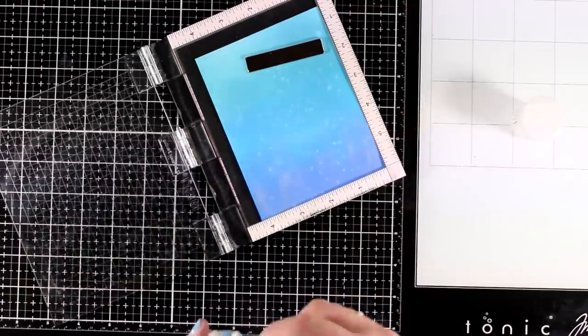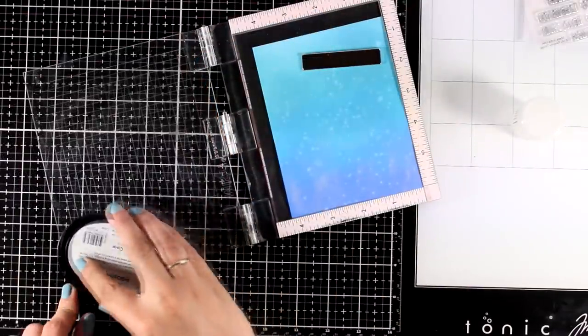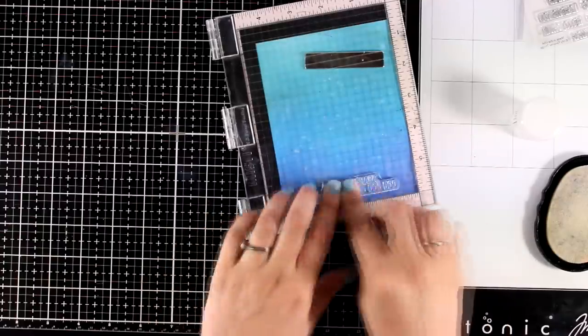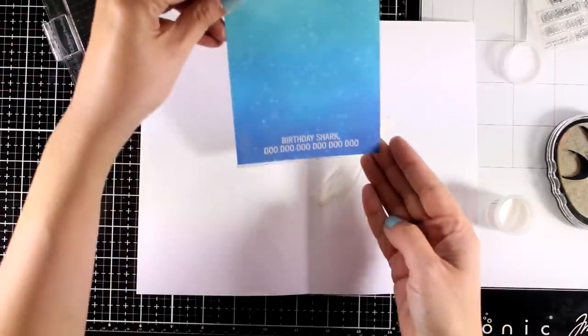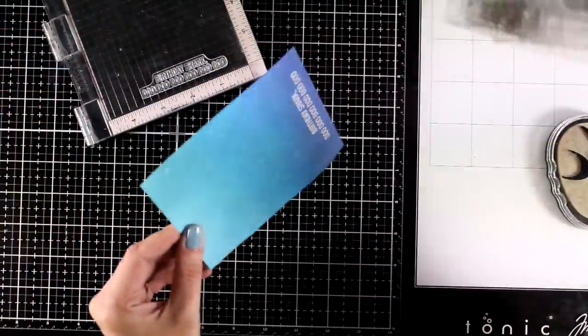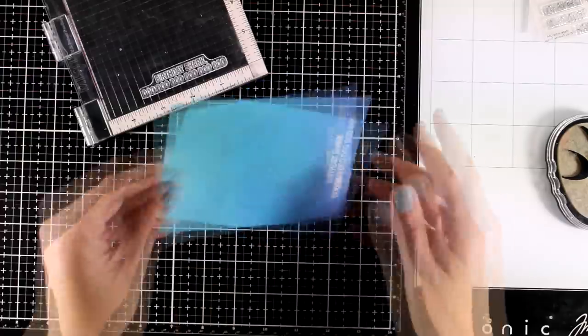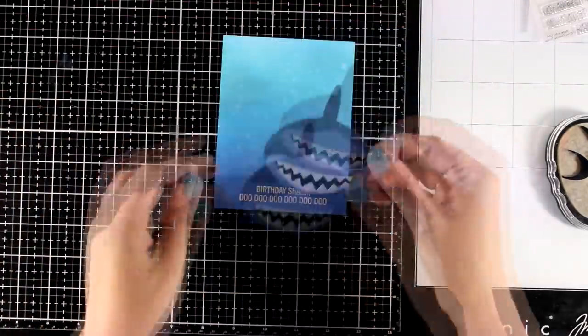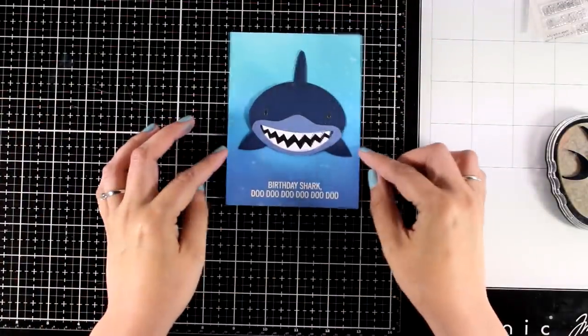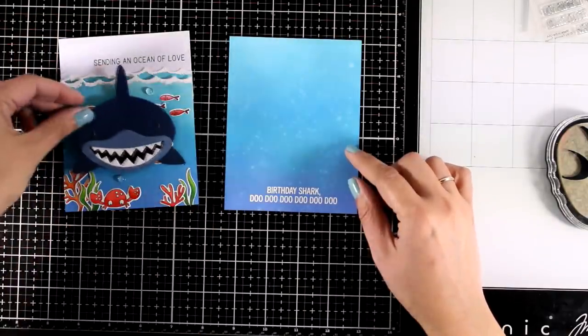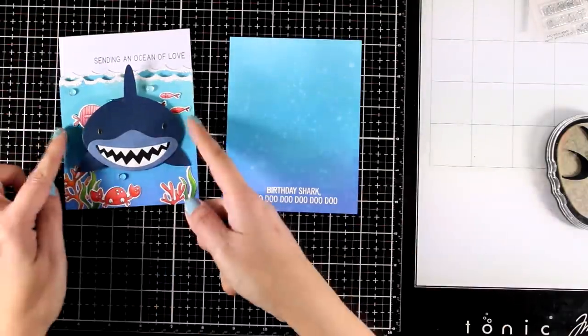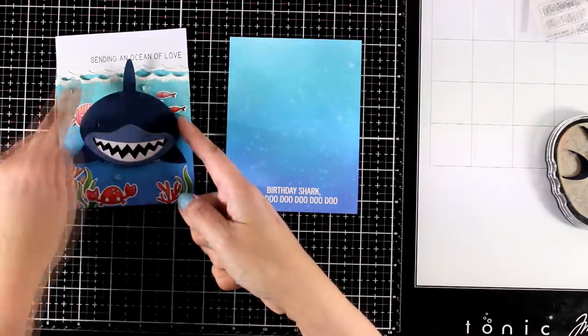I am going to stamp the sentiment and emboss it, that's why I prepared my panel with my anti-static pillow. So I am going with the funniest of the sentiments here. And of course the song was stuck on my head all day. Now I am going to place my shark on top of my ocean here, but I am going to show you that it would work on a more embellished background. So you can see here how it would look and you can have the fin coming out of the waves. But I am going for a more plain card now.